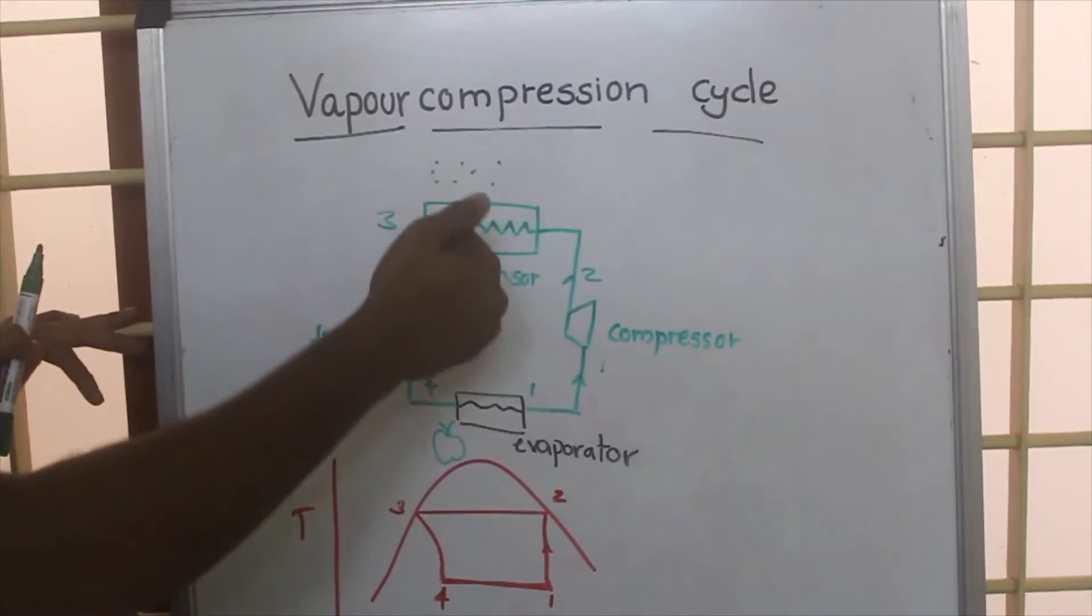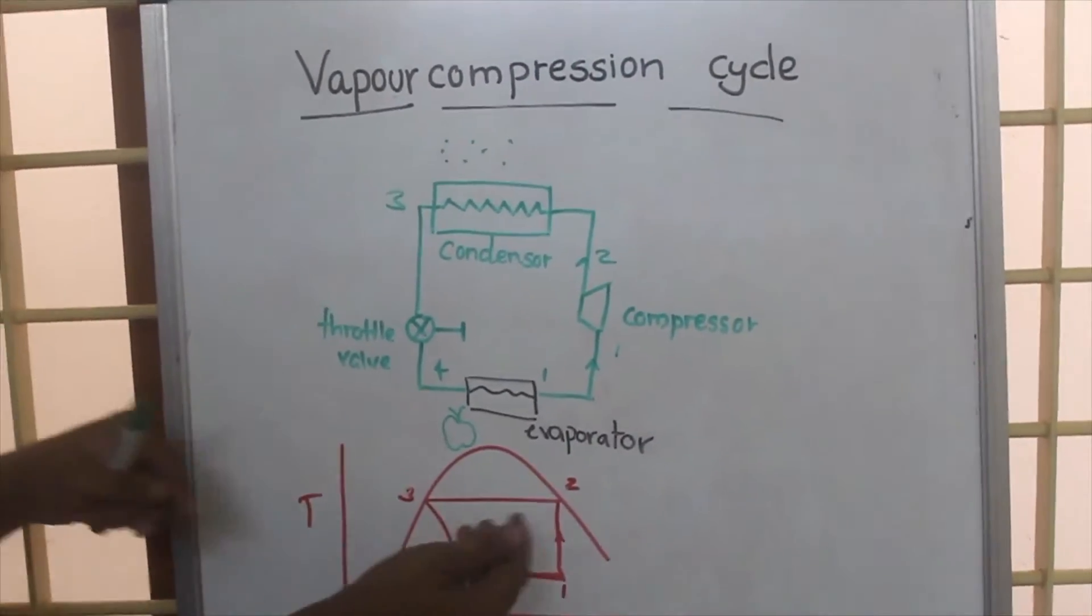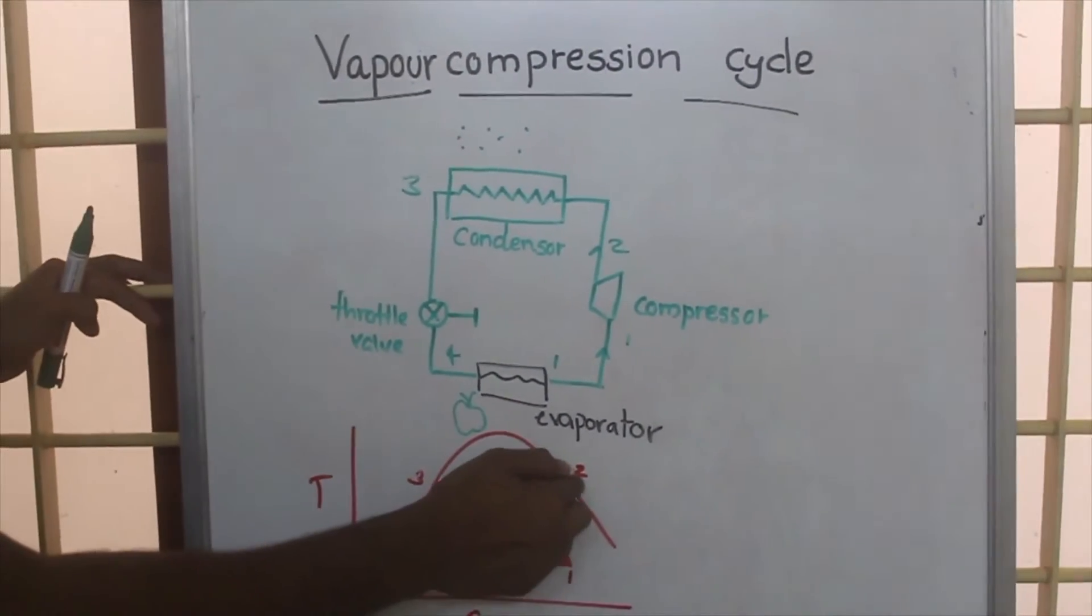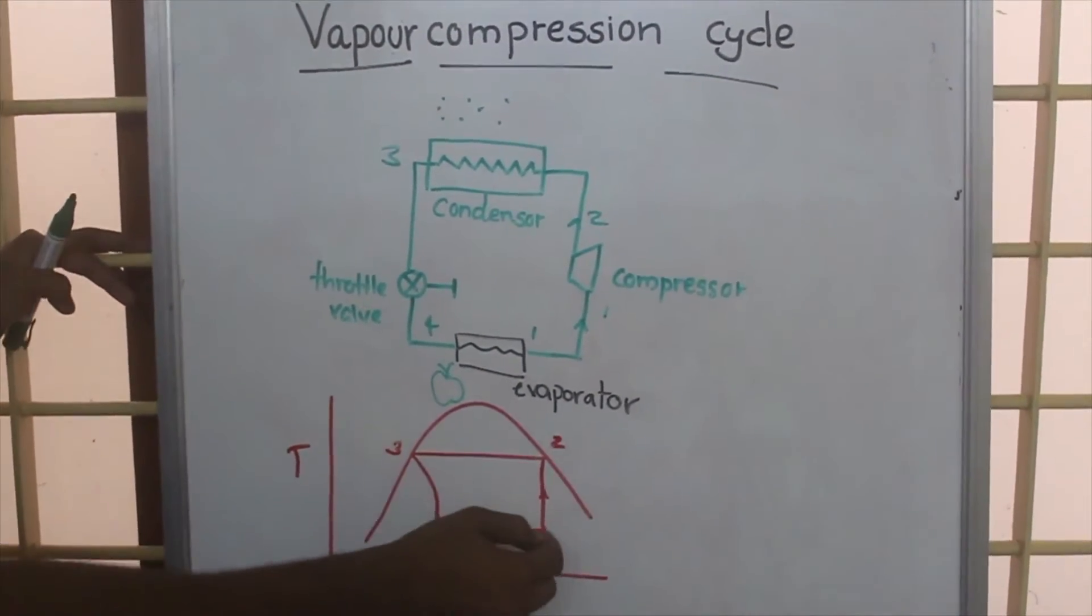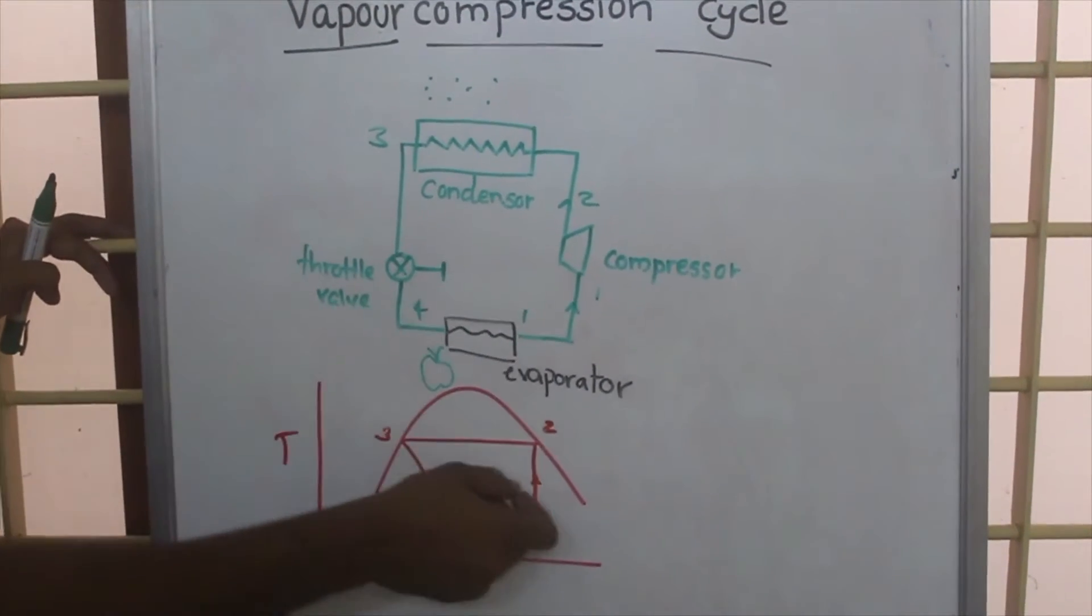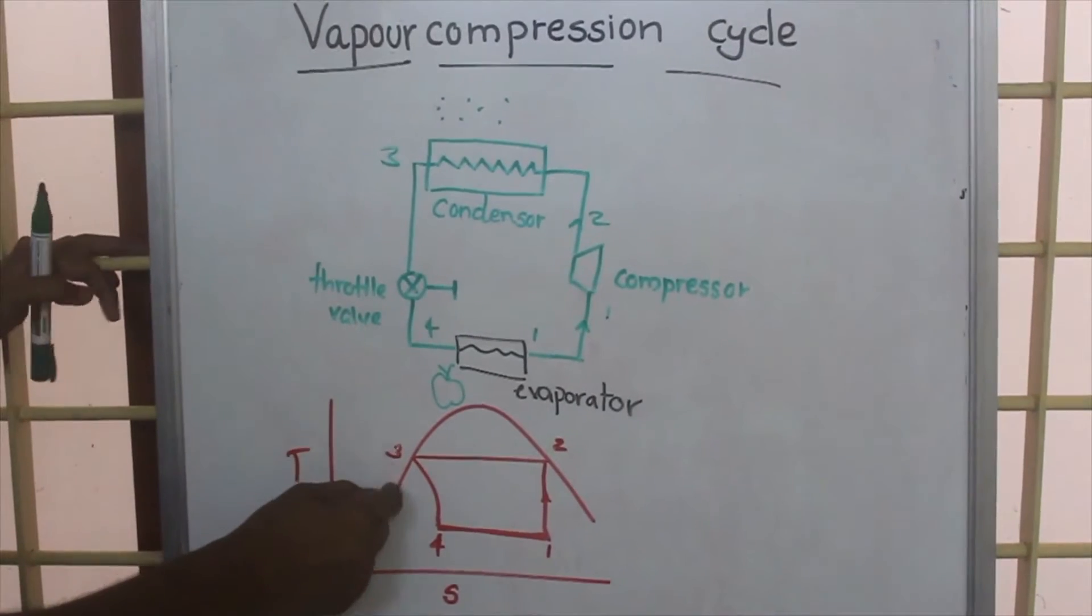After that, this working fluid—we have seen that during compression the working fluid reaches its saturated vapor state. From the saturated vapor state, during this condensation process, it reaches the saturated liquid state.